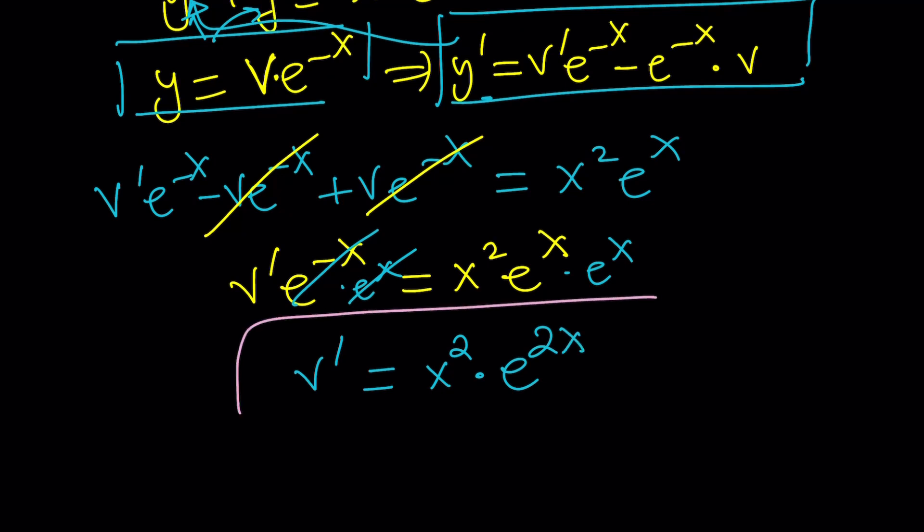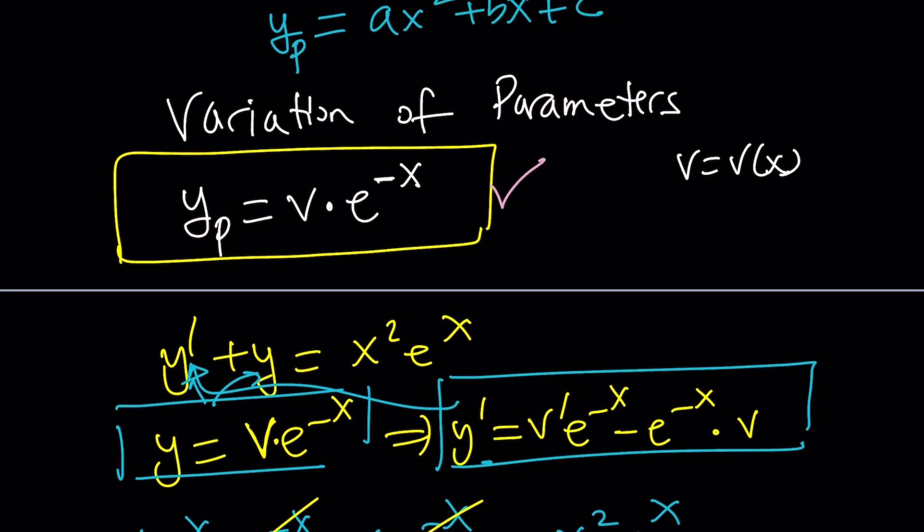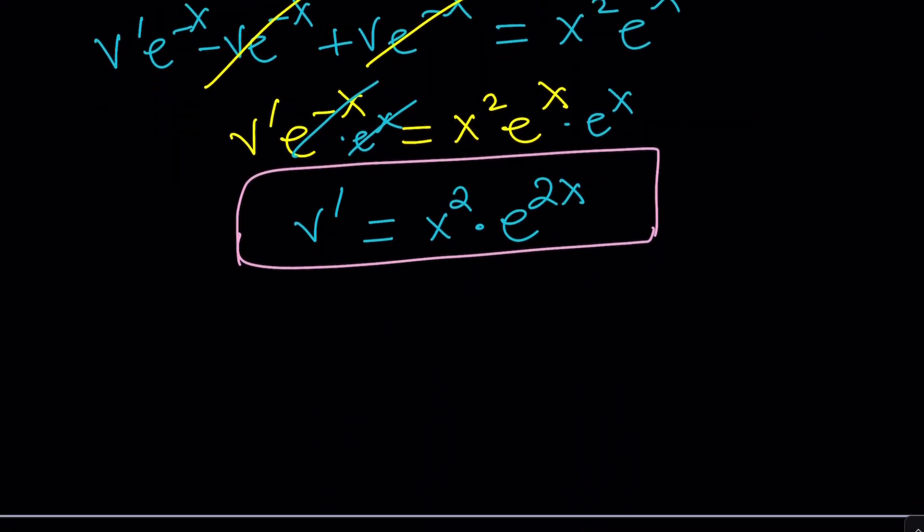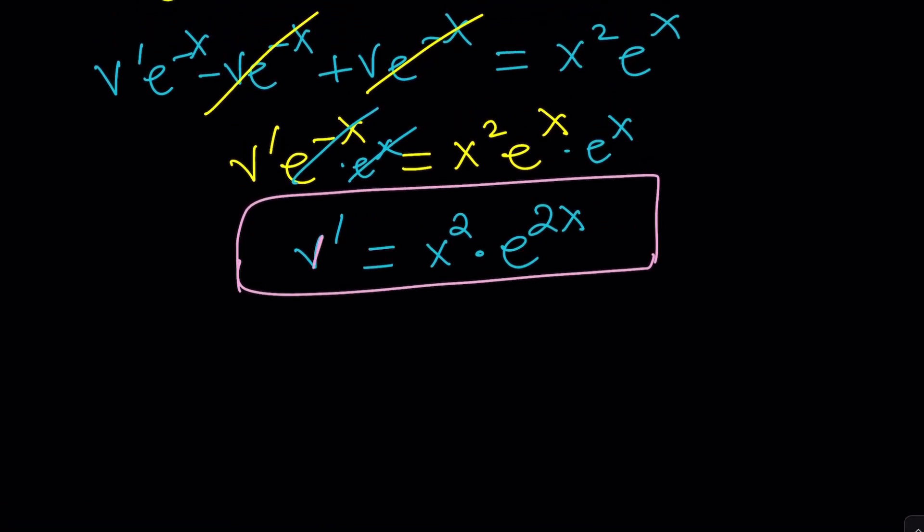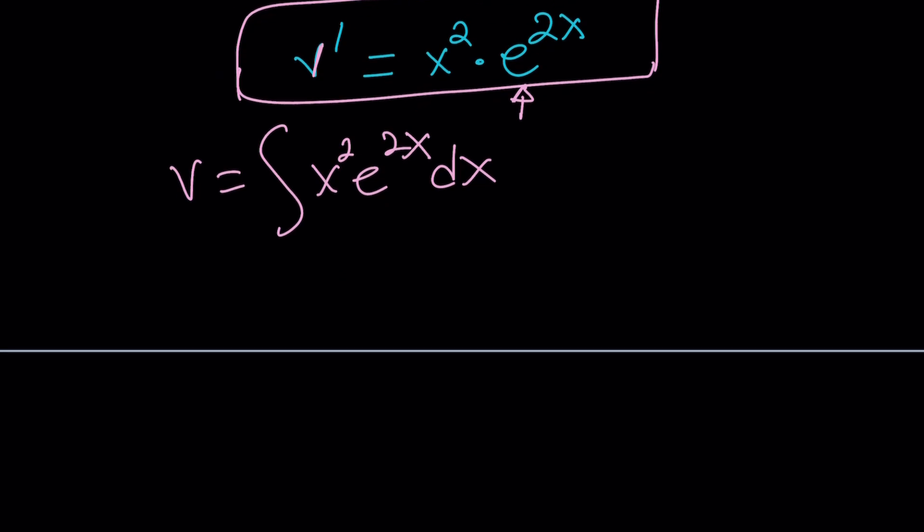We found v', not v yet, but our goal is to solve for v. Because remember, our particular solution is expressed as ve⁻ˣ. So we have to find v. Let's go for v. So how do you find v from here? By integration. Easy. v is the integral of this function because we're looking for a function whose derivative is equal to this. So that's integration. And of course, don't forget the dx, otherwise you're going to lose points.